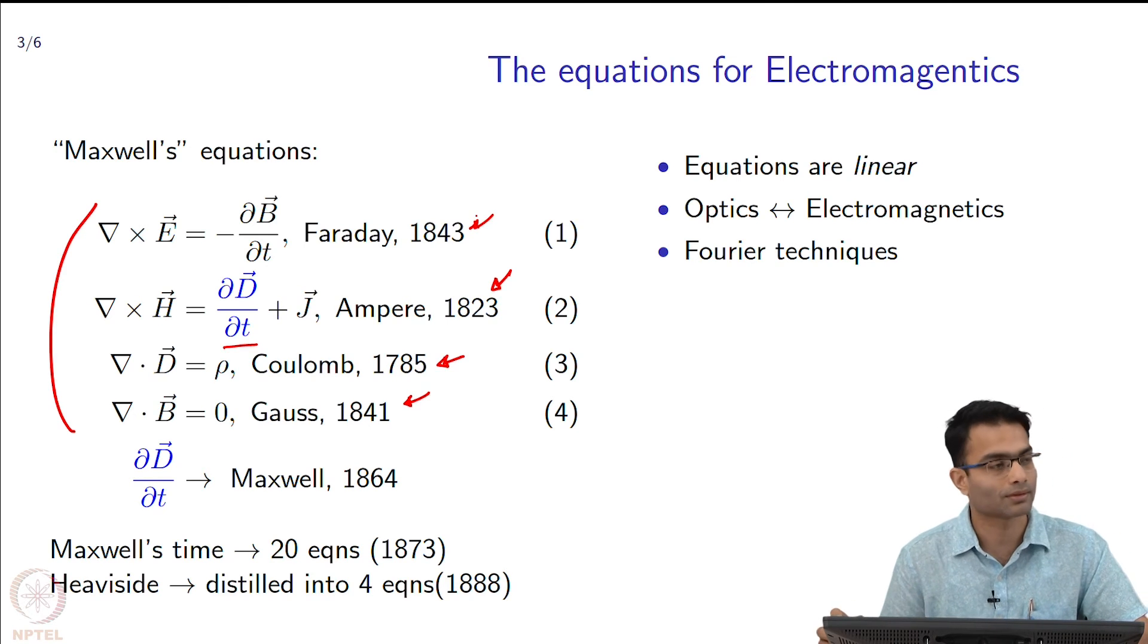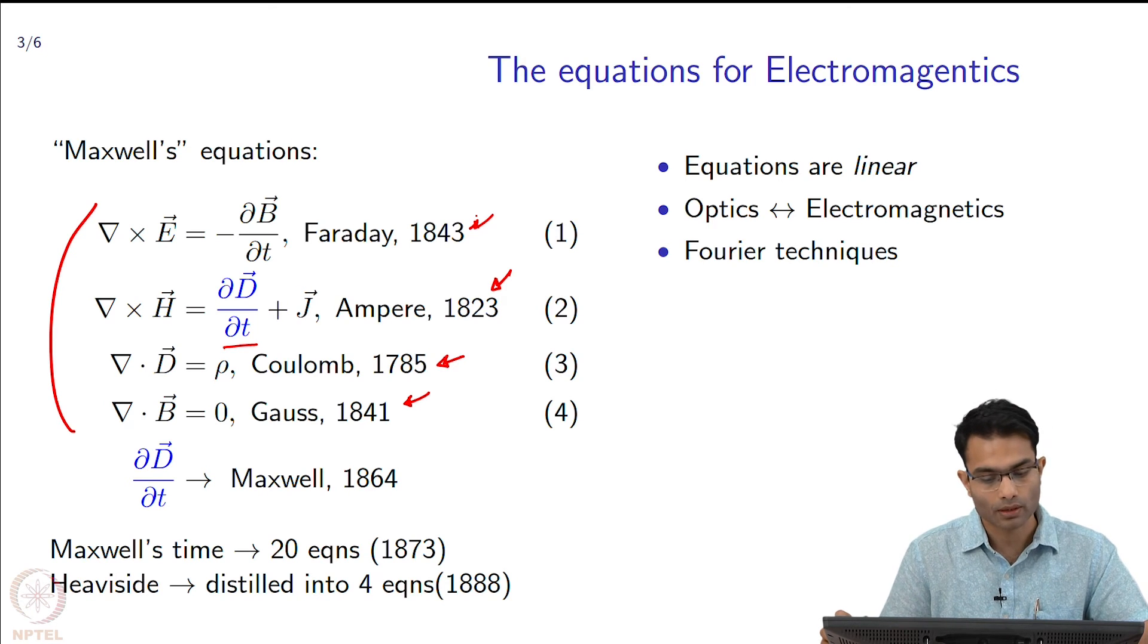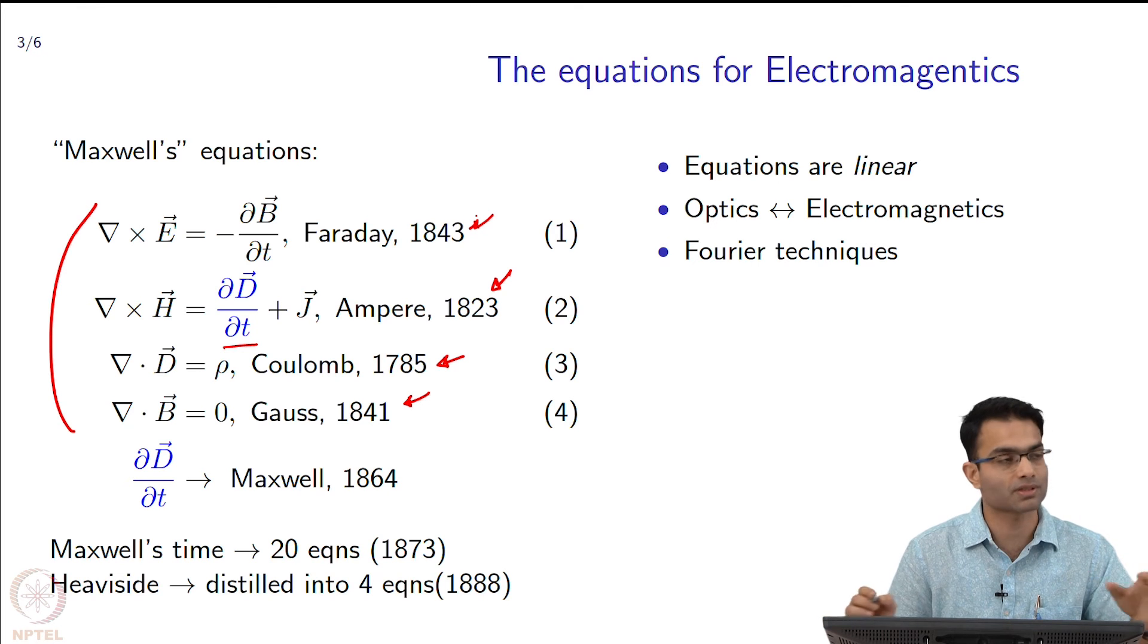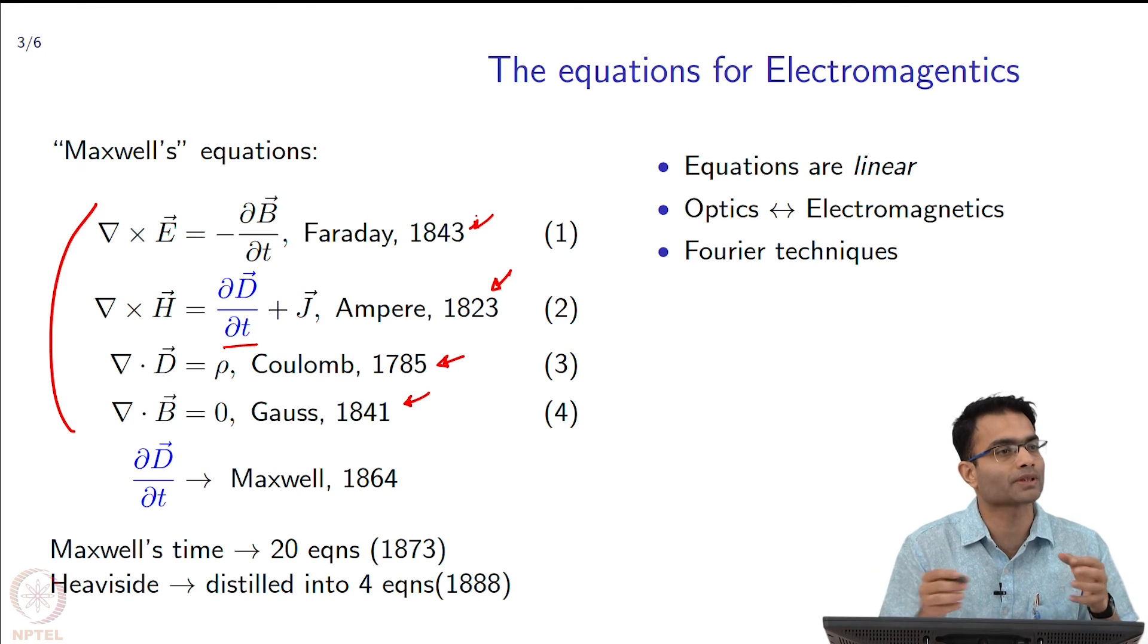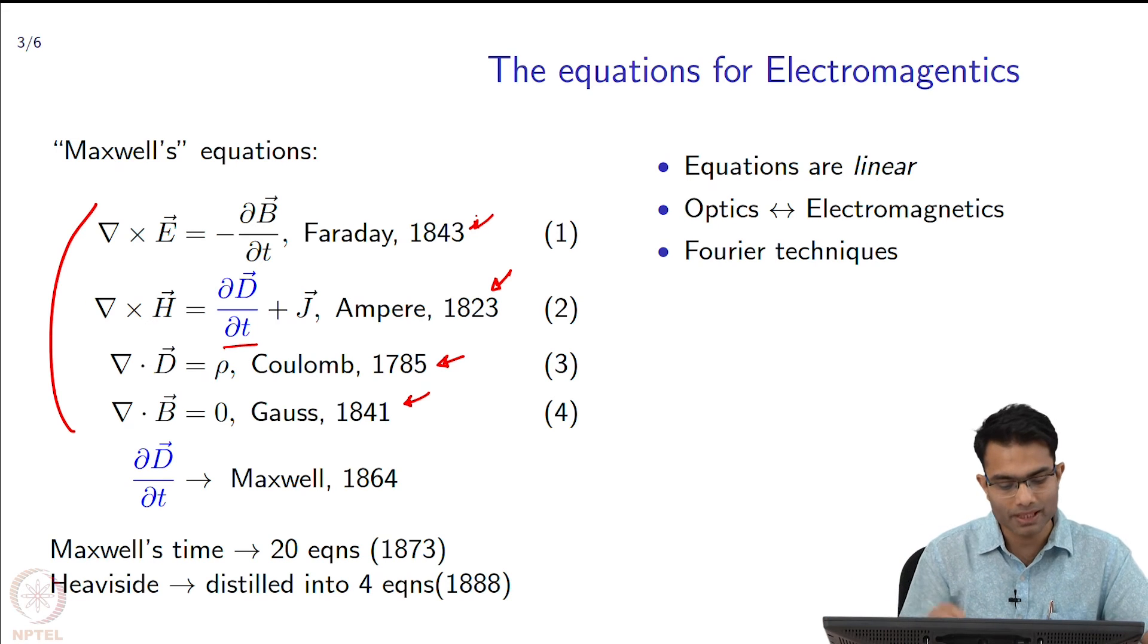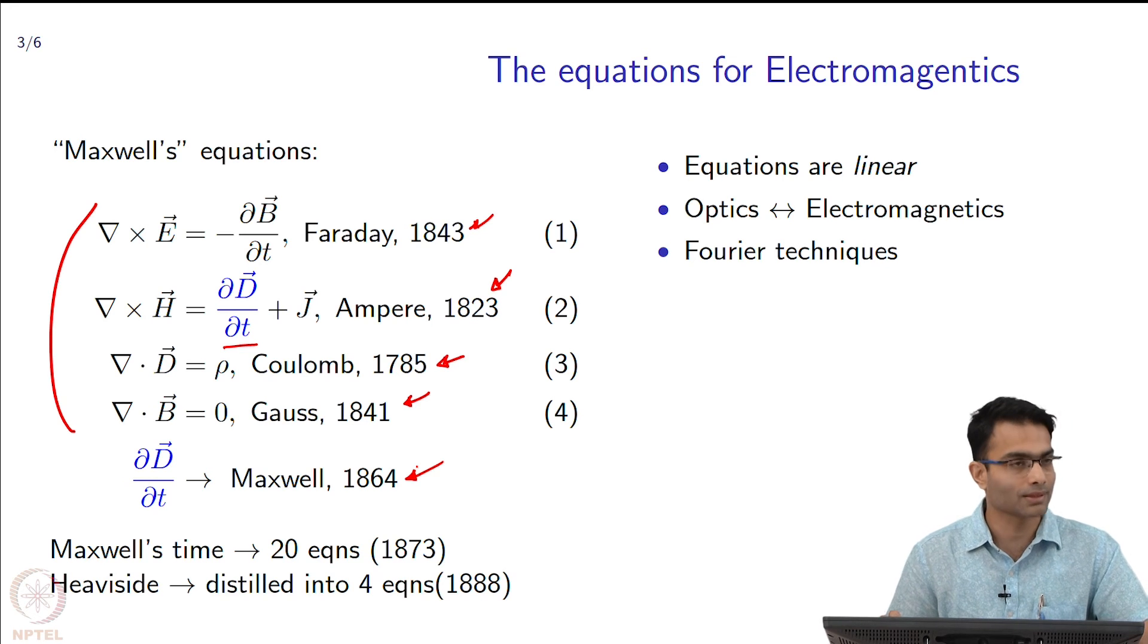Then Faraday had an equation which related the electric field to the magnetic field. Still, at that time these equations were not just 4 equations but they were written in some different format, there were plenty of them. It is actually Maxwell who came in 1864 who said that these equations have an inconsistency in them.